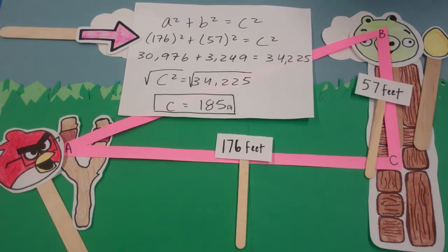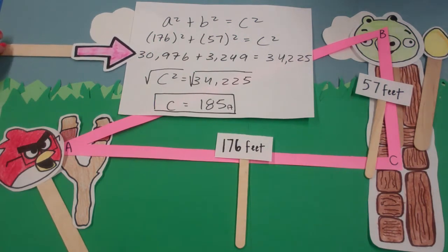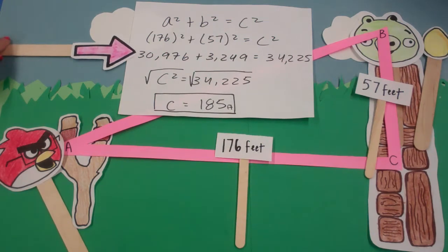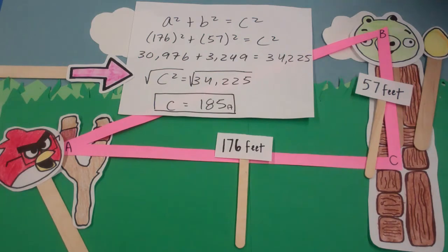Solving for c, the Angry Nerd takes 176 and squares it, and adds it to 57 squared. Adding 30,976 feet and 3,249 feet, the Angry Nerd gets 34,225 feet. Since this equals c squared, and the Nerd is solving for c, he square roots 34,225 feet, and gets 185 feet.